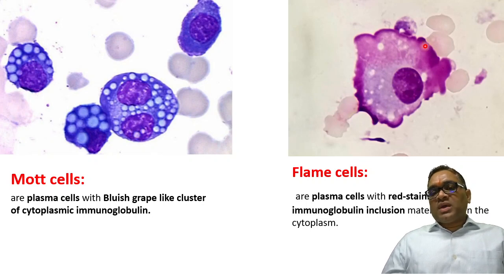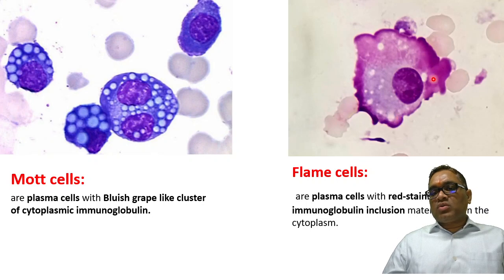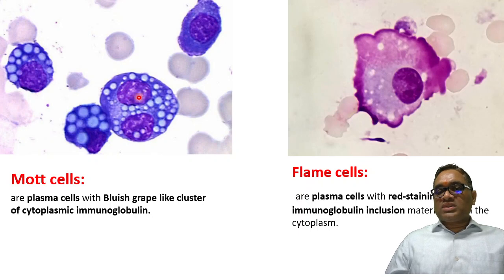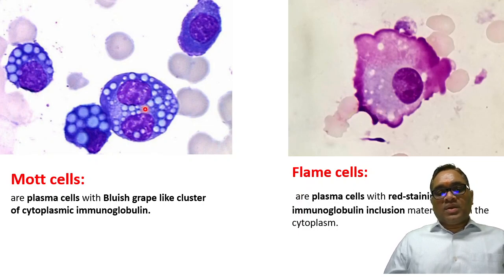In this plasma cell, you can see that the cytoplasm is fiery red due to cytoplasmic immunoglobulin deposition — these are flame cells. That is how you identify Mott cells and flame cells in your exam.